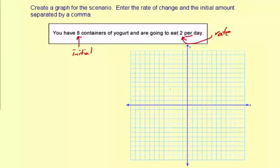So we're starting with eight. So we're going to put a point at zero eight on the y-axis. The y-intercept is always the initial amount.